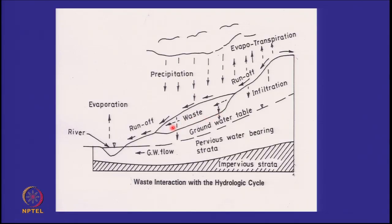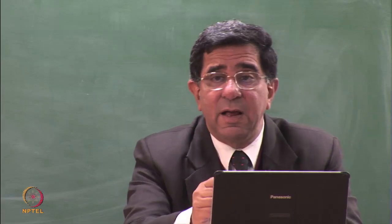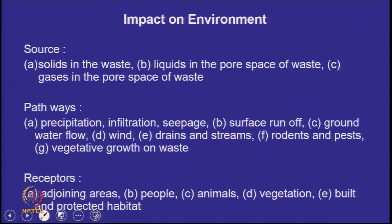When you place waste on the land, it becomes a part of the hydrological cycle: precipitation, runoff, seepage through the waste, groundwater contamination, surface water contamination. The water evaporates, becomes clouds, precipitates again — so the waste is always a part of the hydrological cycle. The waste is a source of contamination. The solids, the liquids in the pore space, and the gases in the pore space can all cause contamination.